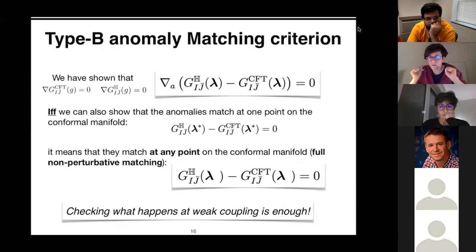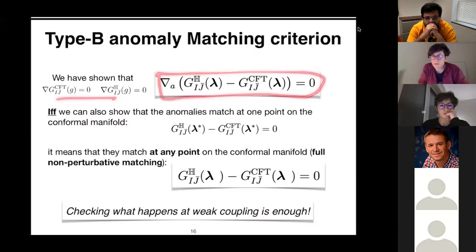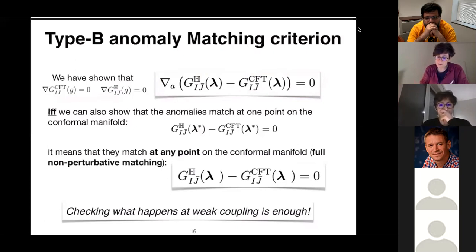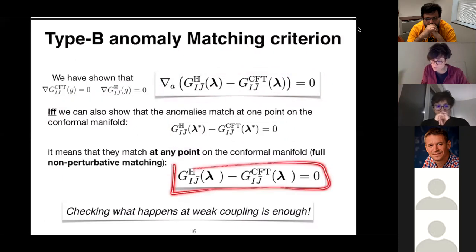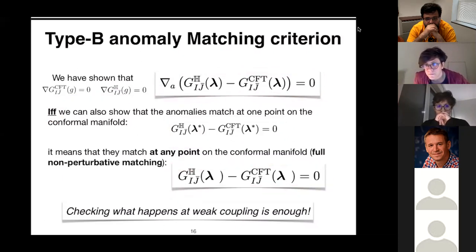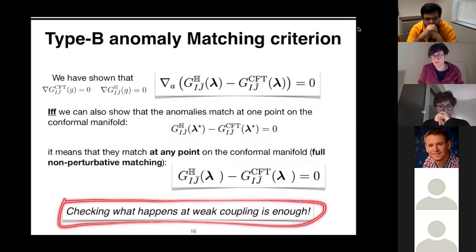So now we have derived these two Ward identities, written in terms of the anomaly coefficient. Now we can talk about matching and not matching — let's phrase the criterion nicely. You can combine them into one first-order differential equation. Just by looking at this, it should be very clear that if and only if we can find one point on the conformal manifold — call it λ* — on which they match, then precisely because of this first-order differential equation, the anomalies will match at every point. Of course, if they don't match, they will never match. I will choose the point at which I can calculate, which is the weak coupling.